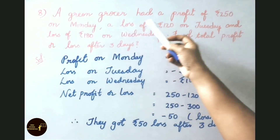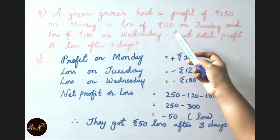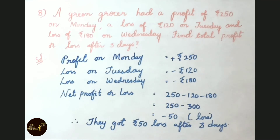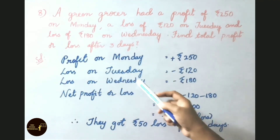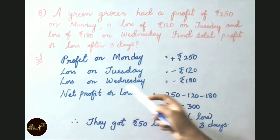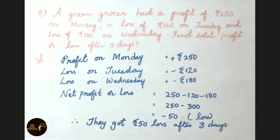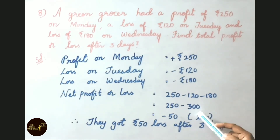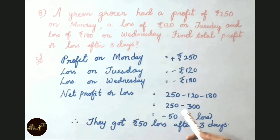See now question number 8. A greengrocer had a profit of 250 rupees on Monday, a loss of 120 rupees on Tuesday, and a loss of 180 rupees on Wednesday. Find the total profit or loss after 3 days. Profit is indicated with plus, so Monday is plus 250. Losses are indicated with minus, so Tuesday is minus 120 and Wednesday is minus 180. Net profit or loss equals 250 minus 120 minus 180. First, 120 plus 180 equals 300 (both negative), giving minus 300. Then 250 minus 300 equals minus 50. So they got a loss of 50 rupees after 3 days.